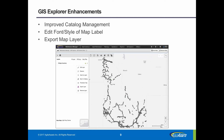We also added the ability to export a map layer as a shapefile. The data stored in the shapefile can be transformed to a new coordinate reference system or retain the default coordinate reference system of the application. This allows agencies to get data that needs to be stored or consumed in a different coordinate reference system, perhaps the agency's default.